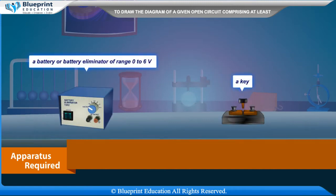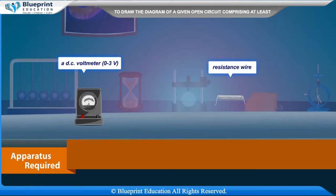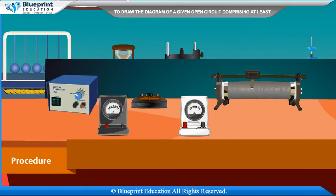Apparatus required: a battery or battery eliminator of range 0 to 6 volt, a key, a rheostat, a DC ammeter of range 0 to 2 ampere, a DC voltmeter of range 0 to 3 volt, resistance wire, and connecting wires.